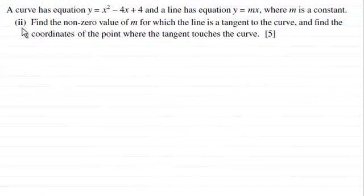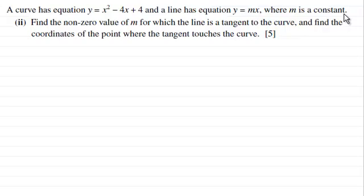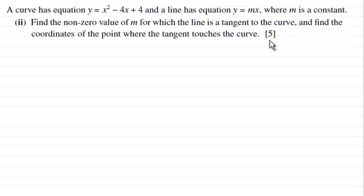We have a curve with equation y equals x squared minus 4x plus 4, and a line with equation y equals mx where m is a constant. For this part we've got to find the non-zero value of m for which the line is a tangent to the curve, and find the coordinates of the point where the tangent touches the curve, for five marks.